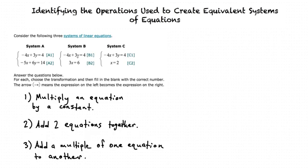Our first option is that A2 was multiplied by a constant to get B2. Is that what happened? Well, there's no number that we could multiply the first equation by to get that second equation. So I don't think that's it. You're right. That's not what happened.